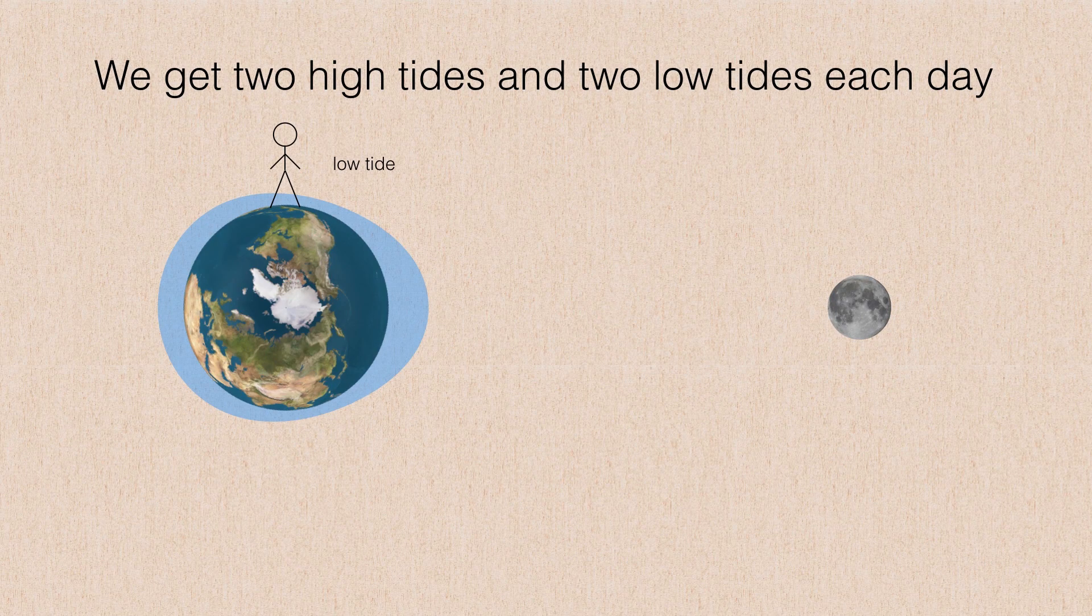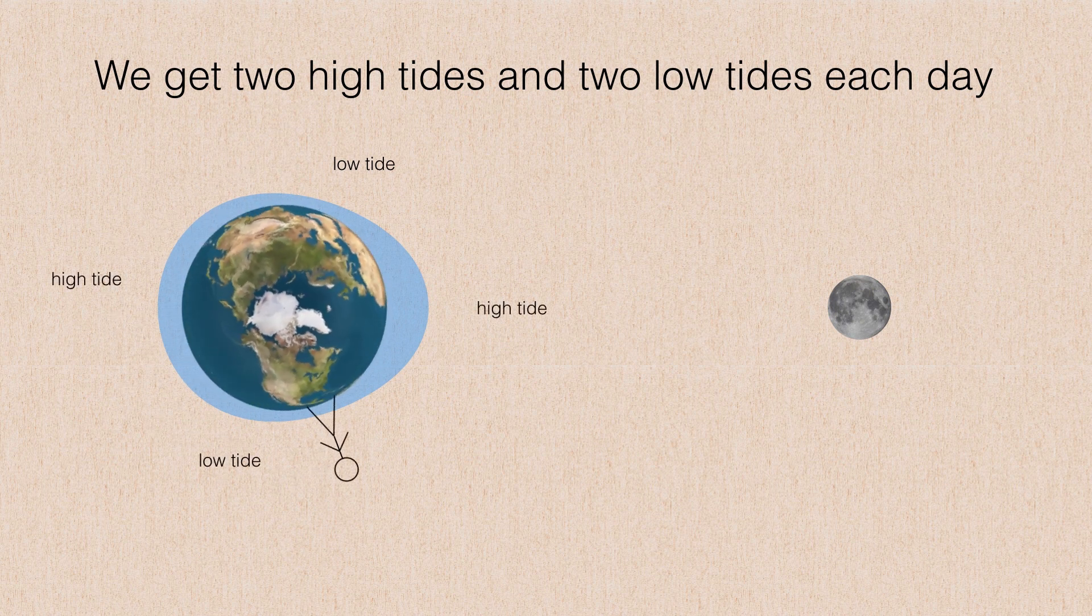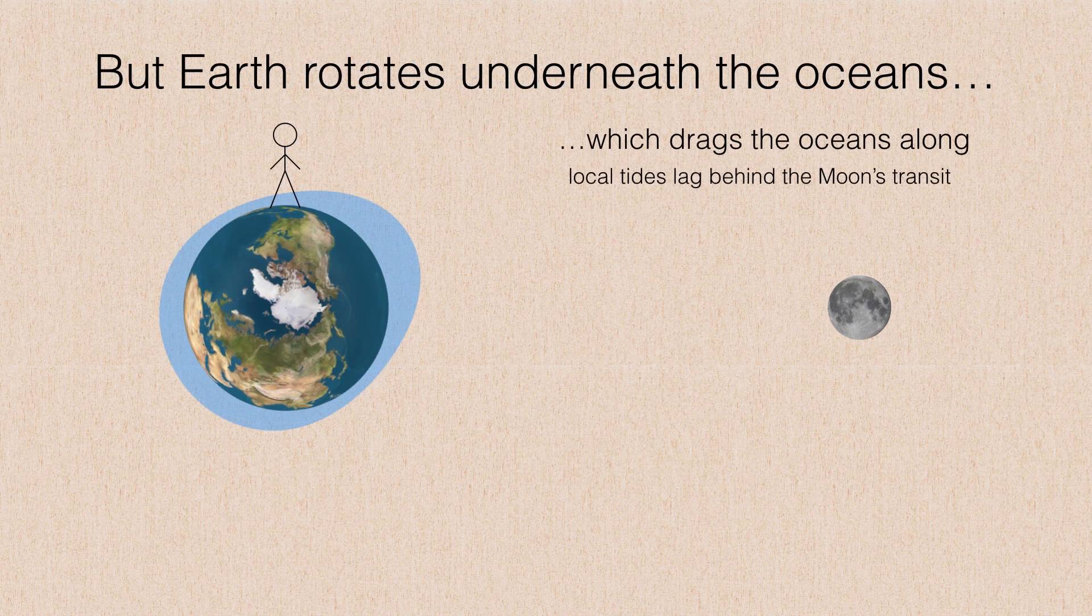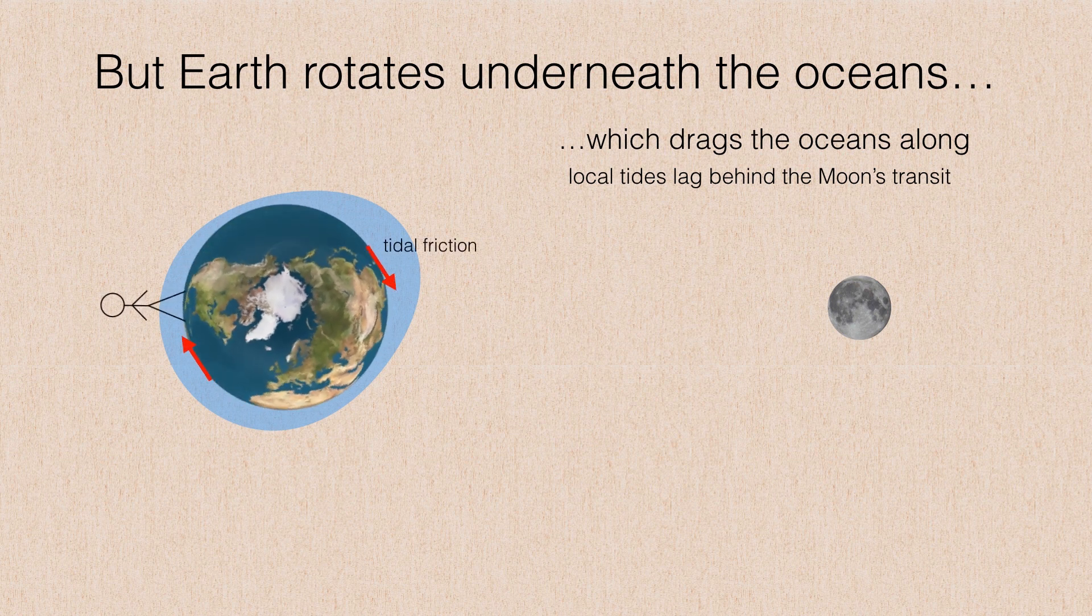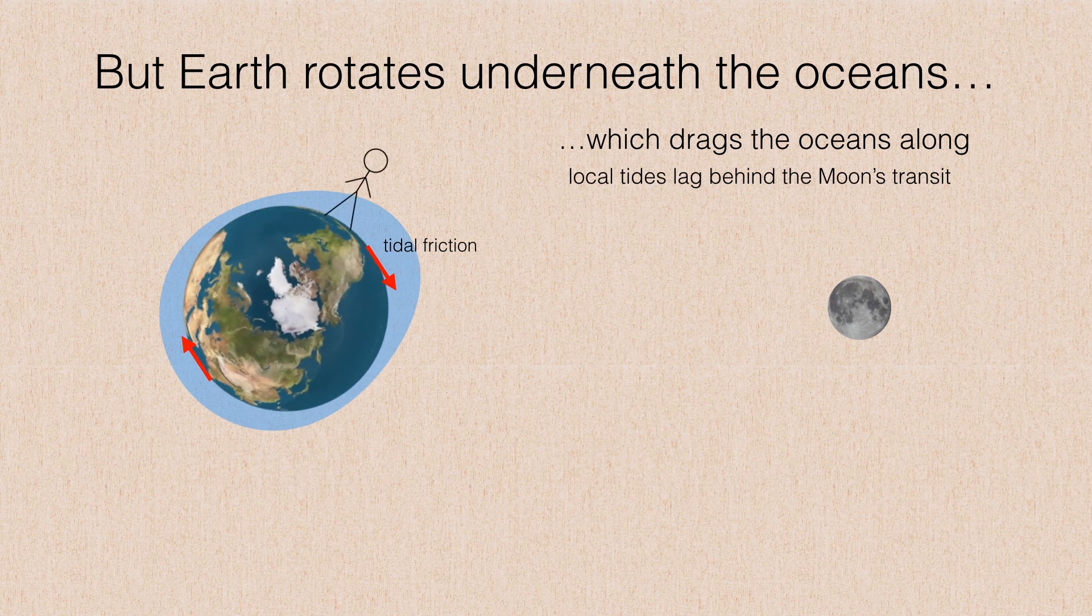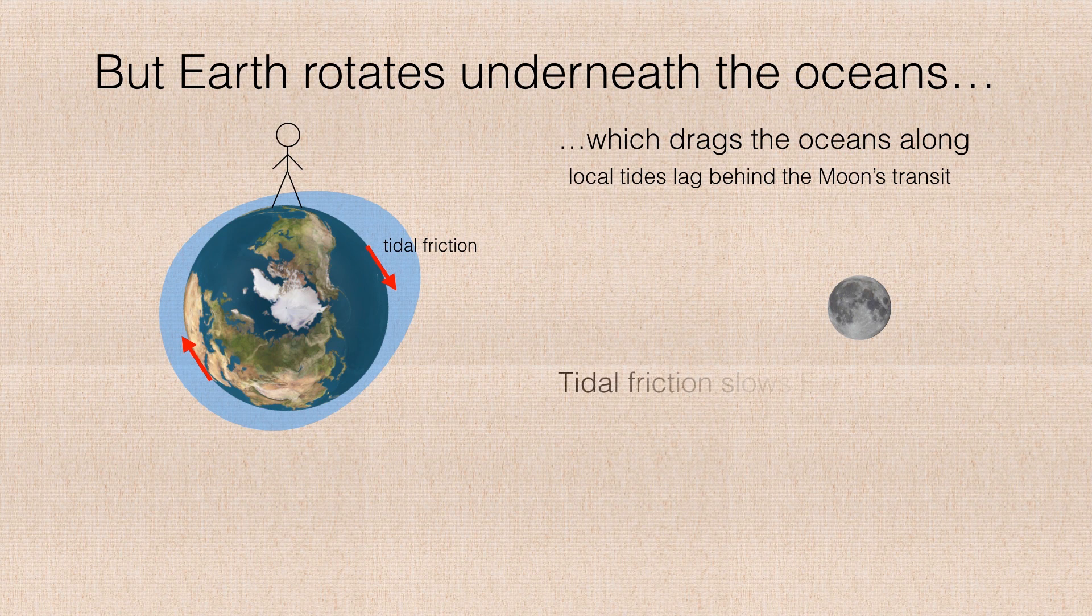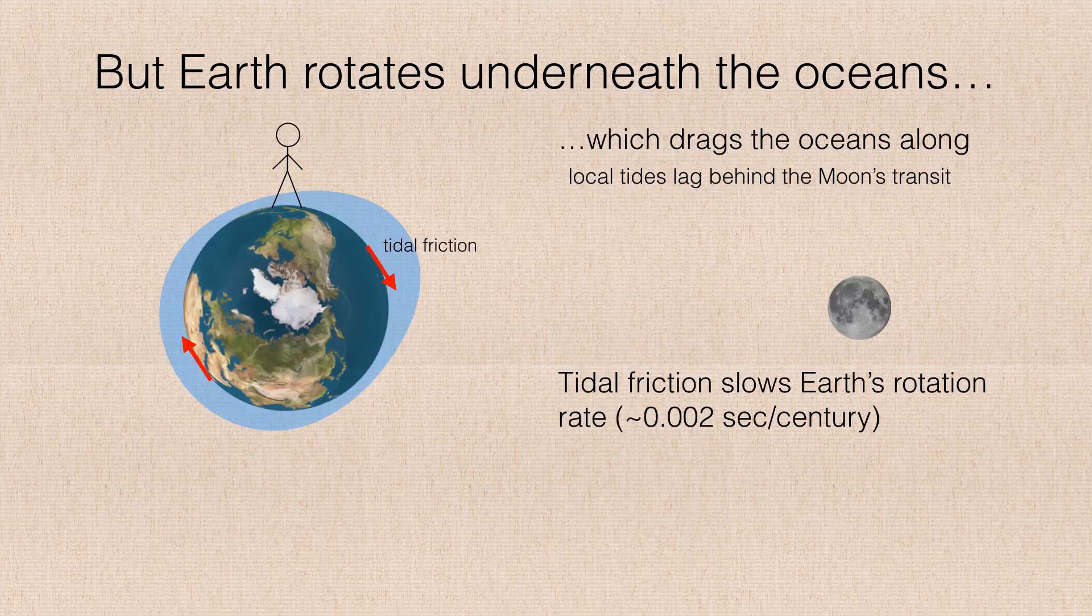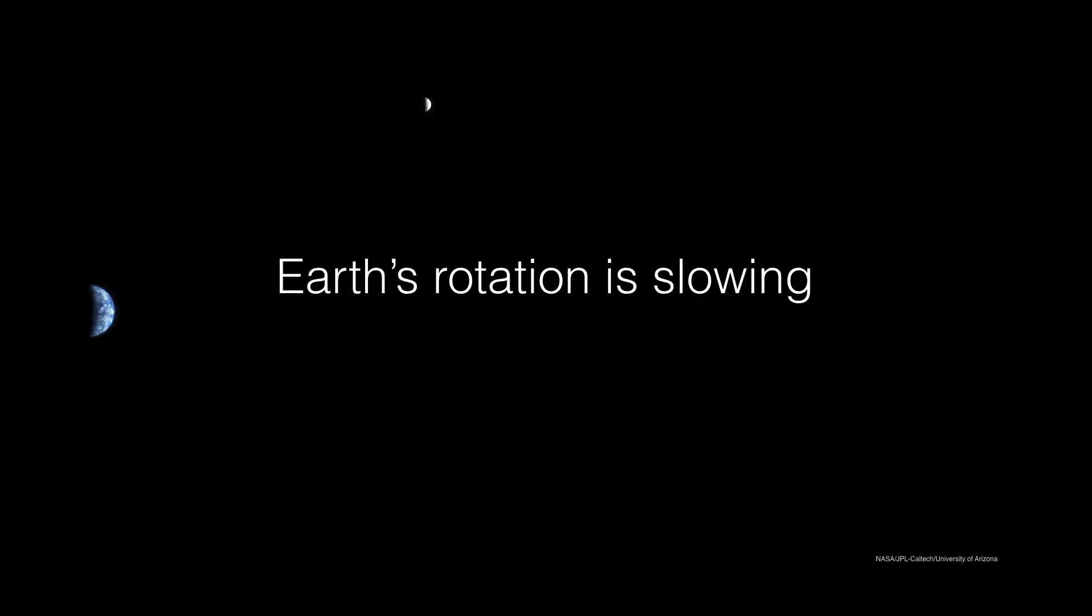Because we get a tidal bulge that forms on either side of the Earth, we get two high tides and two low tides per day. But there is another complication. As the Earth rotates, it drags that tidal bulge around with it, and so we get friction. The water of the ocean is dragging the Earth a little bit, and that has the result of slowing down the Earth's rotation rate. It turns out that the Earth rotates a little bit slower every year to the tune of about two milliseconds per century. So it's not much of a slowdown. And yet the Earth's rotation is in fact slowing down, and that means over billions and billions of years, things are changing. The Earth's day used to be shorter than 24 hours, and at some point, the Earth's day will be longer than 24 hours.